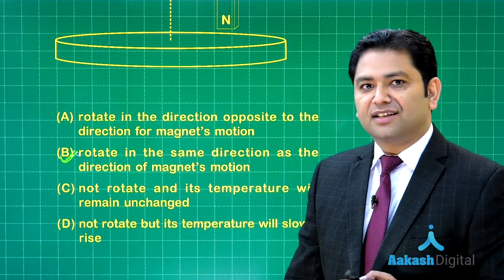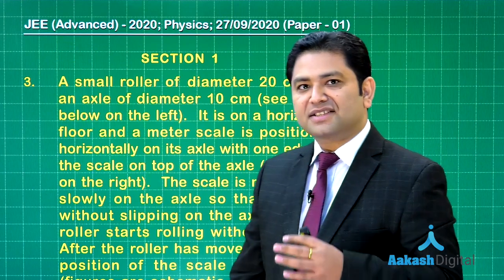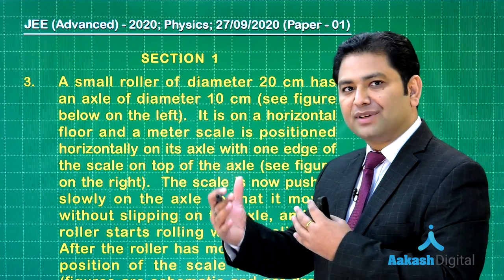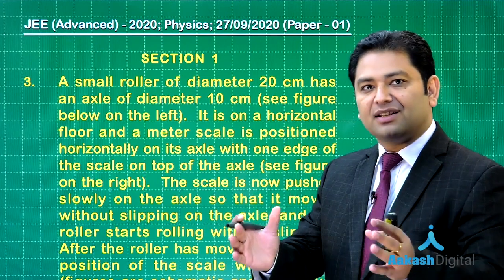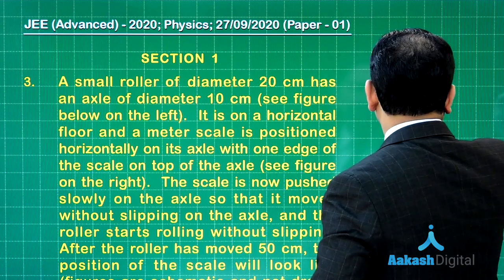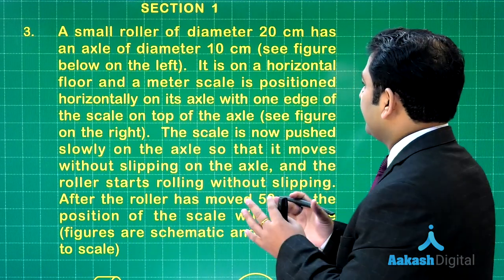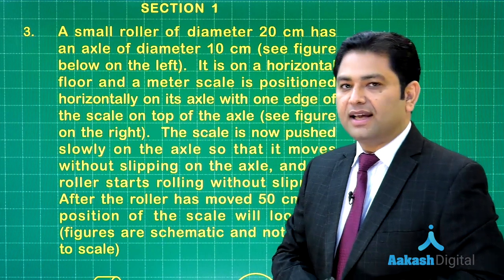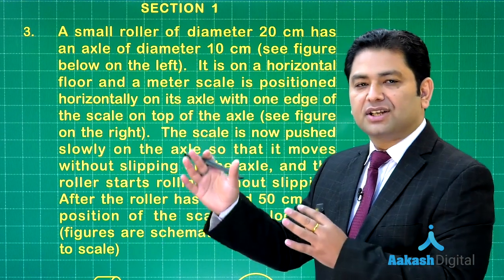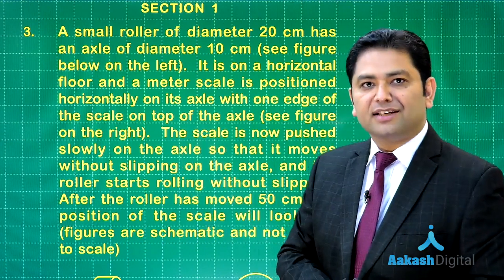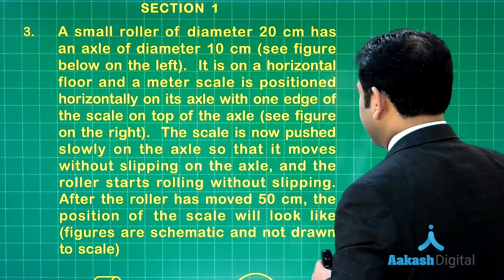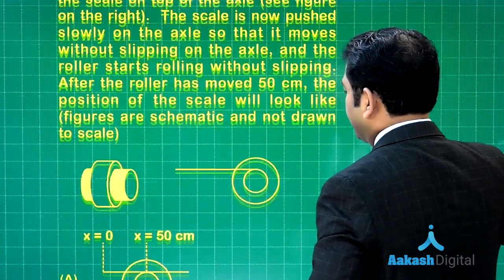Let us go to the third. The third one is again from rotational motion and the concept of rolling without slipping. Specifically, the constraints of this is being asked here. Go through the matter of the question and you would find that there is a small roller having external radius and internal radius. The relation is the external radius is twice as much as the internal one, and there is also a meter stick. Where is the meter stick placed?